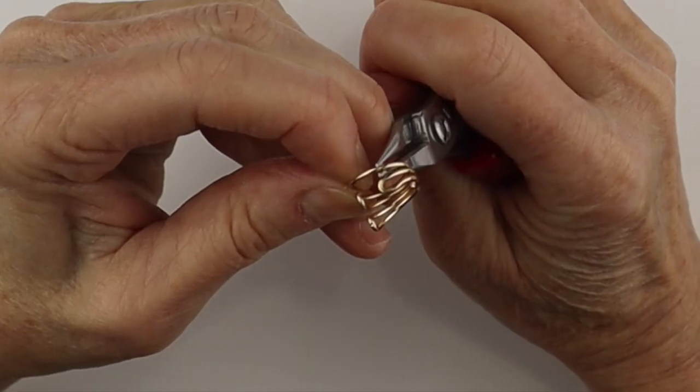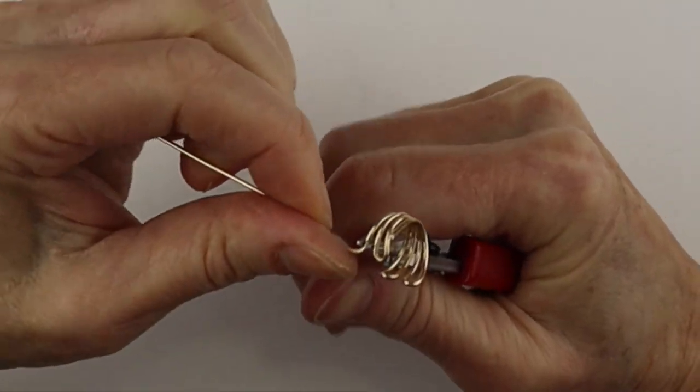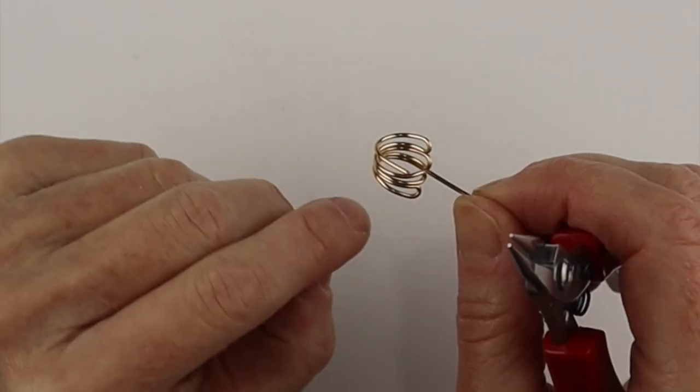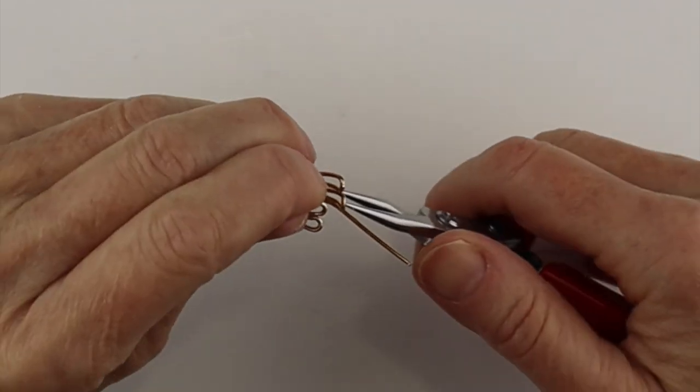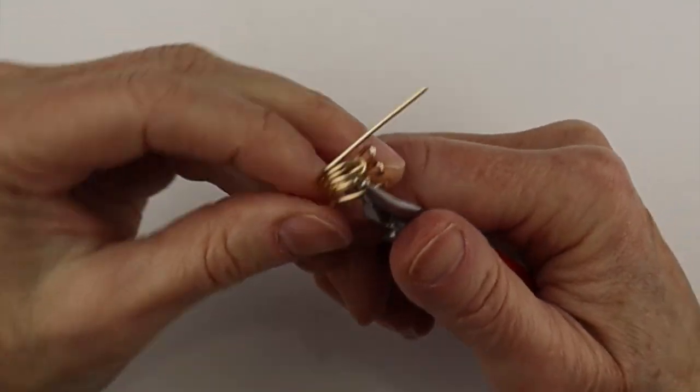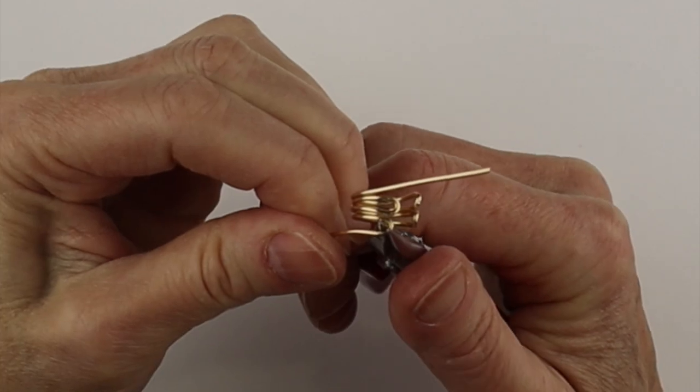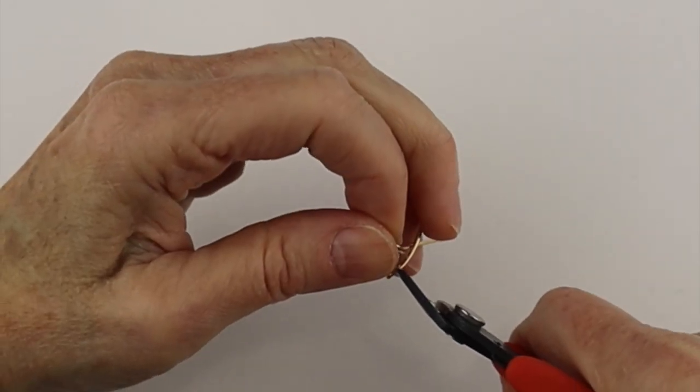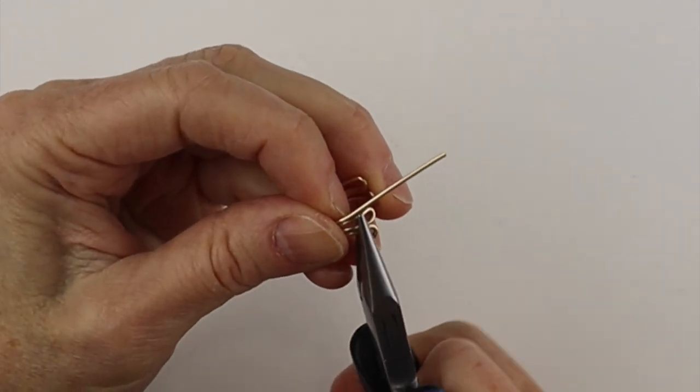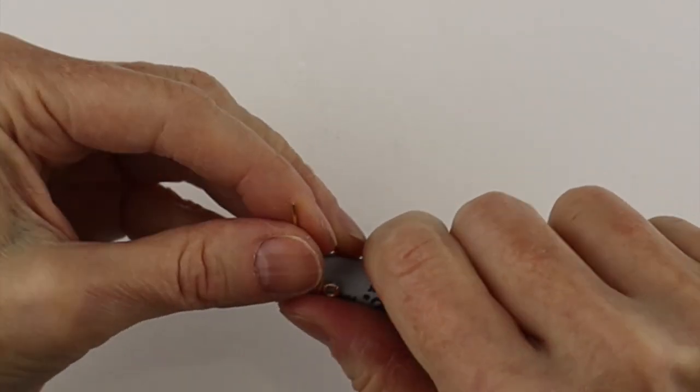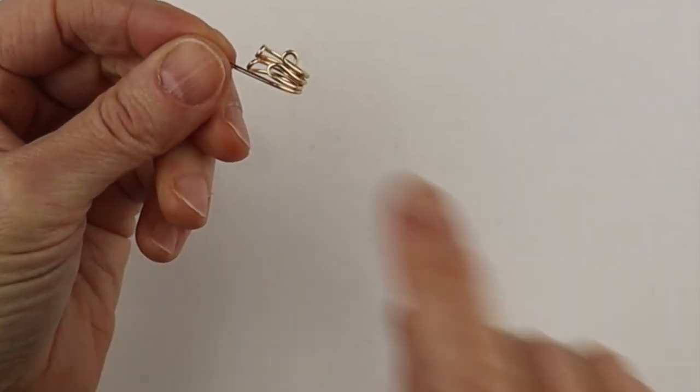And we could do the same here. Hold this with the round pliers and bring it around. And if you want it very discreet, just with a couple of loops, we can just take this end, bring it up here, clip it so it's flush, and push that end in. Continue this one so it's a little more rounded and do another loop on that side.